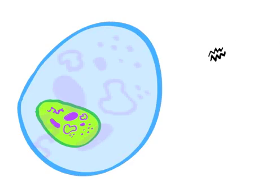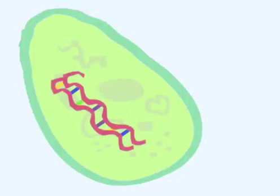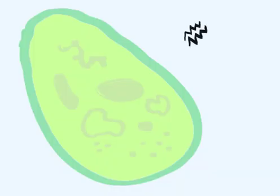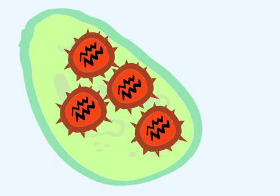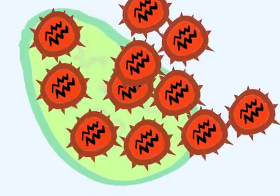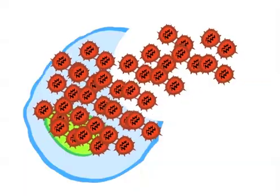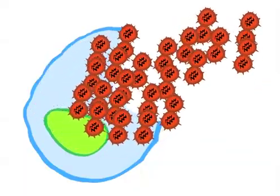Now the nucleic acid in the virus is free to move toward the cell's nucleus. The nucleus of the cell takes care of replication of DNA, allowing for the creation of new cells. The nucleic acid from the virus enters the nucleus and changes it into a virus factory.